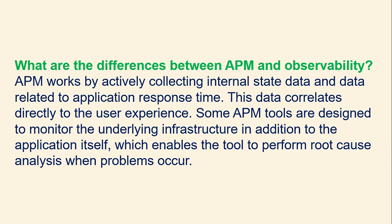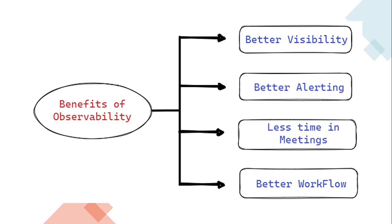APM works by actively collecting internal state data and data related to application resources and time — data that correlates directly to the user experience. Some APM tools also monitor the underlying infrastructure in addition to the application itself, enabling root cause analysis when problems occur. Benefits of observability include better alerting, less time in meetings, better visibility, and better workflow design.